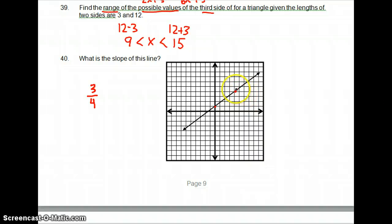We can check if we go up 3 again. 1, 2, 3, and over 1, 2, 3, 4. It'll end right in the middle of the square. So the answer is 3 over 4.